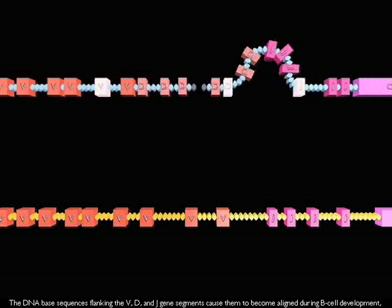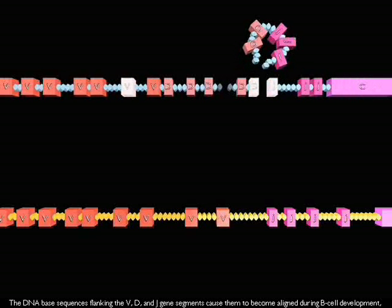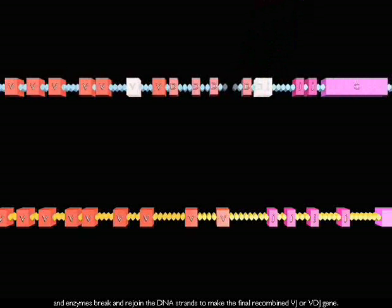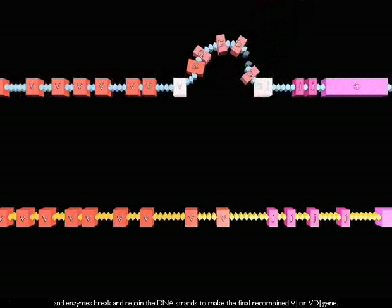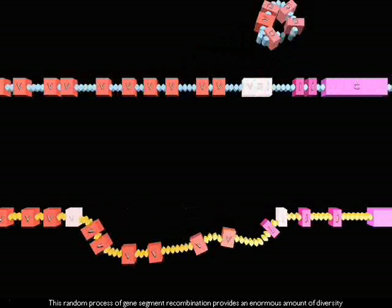The DNA-based sequences flanking the V, D, and J gene segments cause them to become aligned during B cell development and enzymes break and rejoin the DNA strands to make the final recombined VJ or VDJ gene.